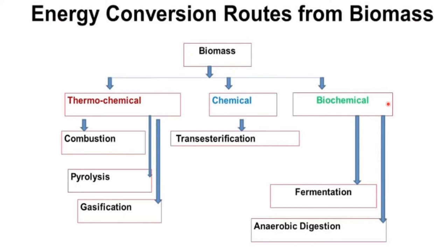Now, how is biomass converted into energy? Biomass can be converted into biofuel by three methods: the thermochemical method, the chemical method, and the biochemical method. The thermochemical method is further divided into combustion, pyrolysis, and gasification. The chemical method involves transesterification. The biochemical method is further divided into fermentation and anaerobic digestion.